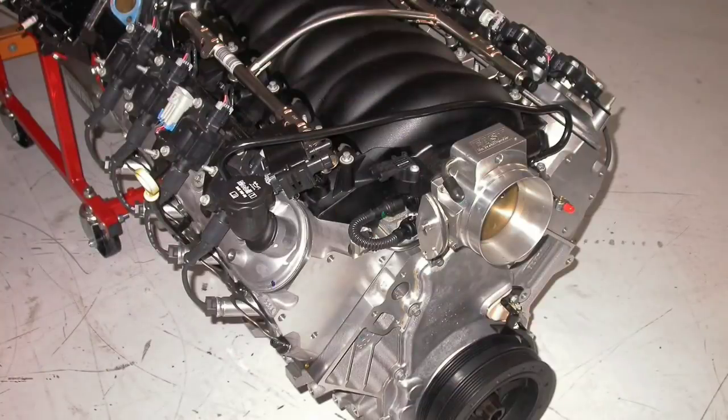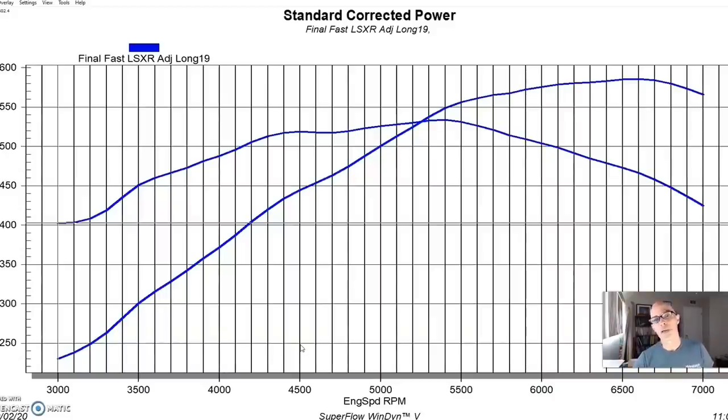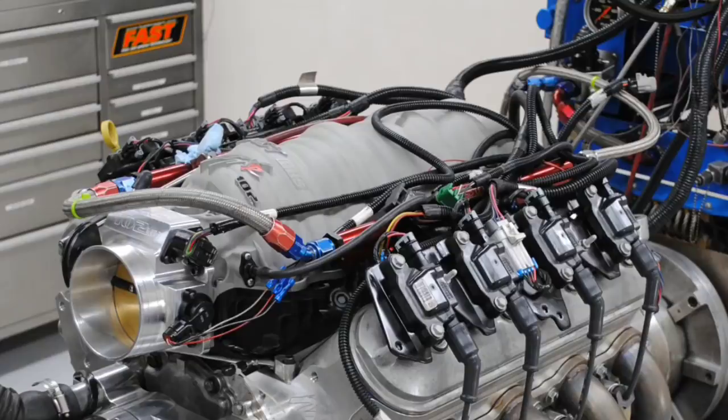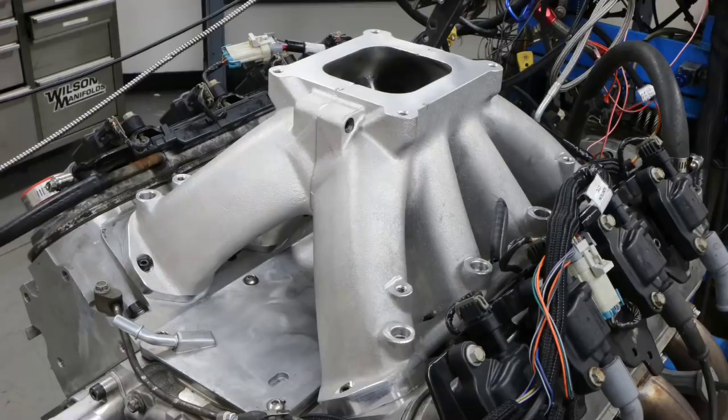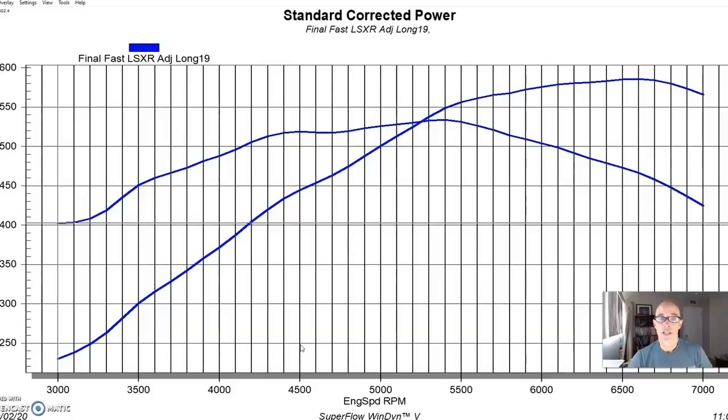To illustrate the effect of displacement on the intake manifold comparison, we ran the same two intake manifolds, a Fast LSXR designed for the LS3 application and the Mast single-plane intake. And I was lucky enough to run that on three different combinations, three different displacements, and three different power outputs.